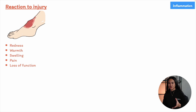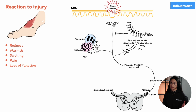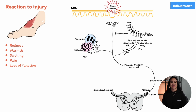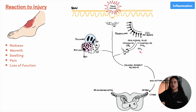When tissue is damaged, it triggers the release of various chemicals that mediate the inflammatory response. Some of these chemicals make the area more sensitive to pain by stimulating nerves that detect pain. These nerve signals and local mediators work together to create the symptoms of inflammation. One key group of mediators involved in inflammation comes from arachidonic acid, and this is where we see the importance of why we're talking about it.